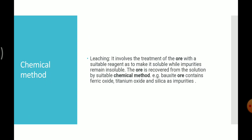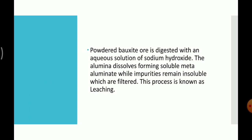Example: bauxite ore contains ferric oxide, titanium oxide, and silica as impurities. Powdered bauxite ore is digested with an aqueous solution of sodium hydroxide. The alumina dissolves, forming soluble meta-aluminate, while impurities remain insoluble and are filtered. This process is known as leaching.